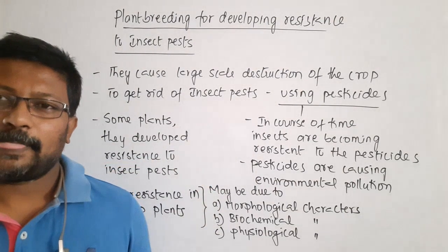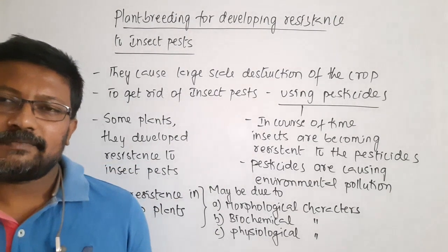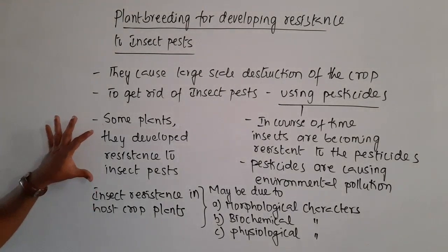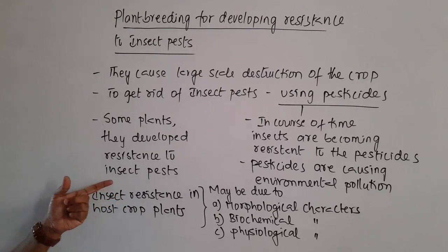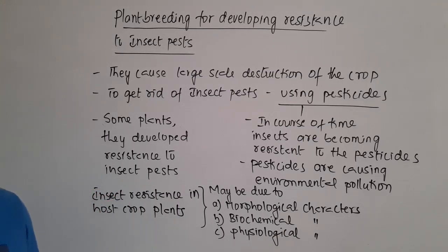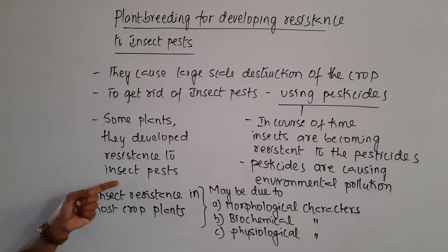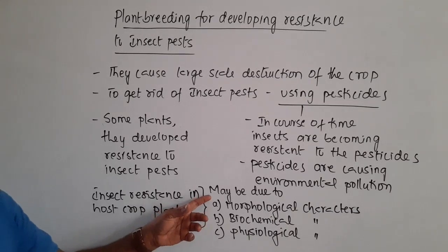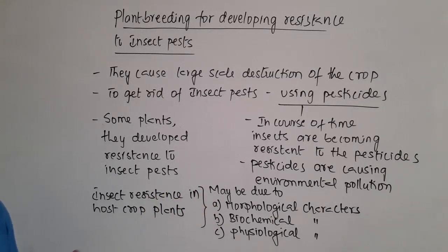For these reasons, we need to develop plants that are capable of resisting pests themselves. In some plants, resistance to insect pests has developed naturally. Many plants have naturally developed insect pest resistance over time, and insect resistance in host crop plants is present naturally.